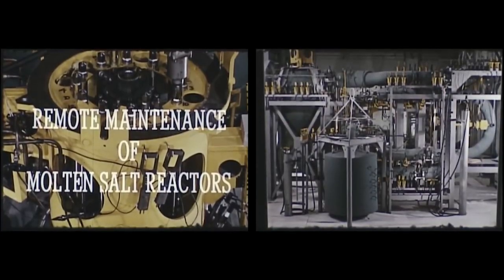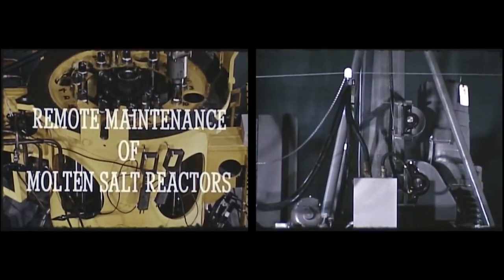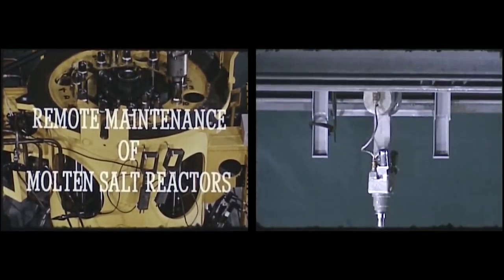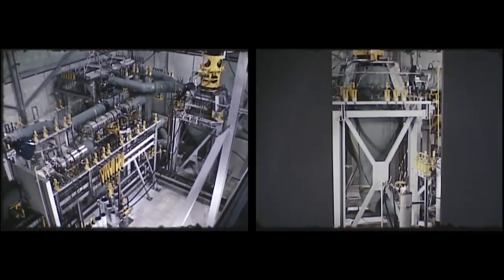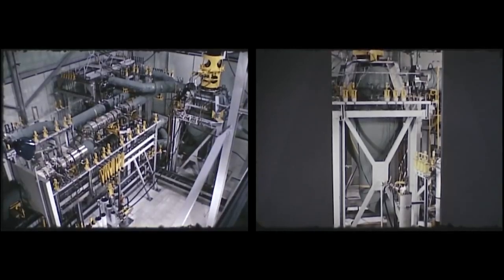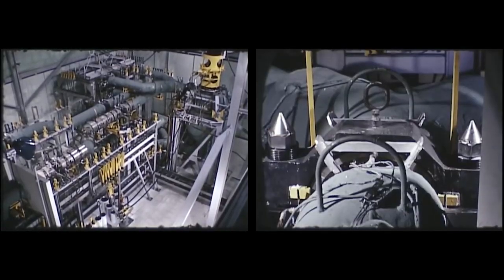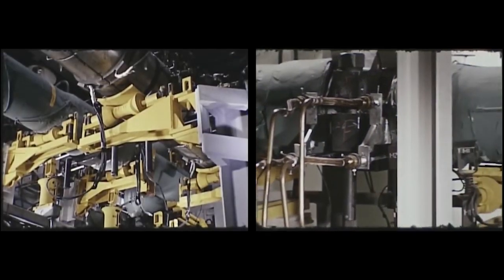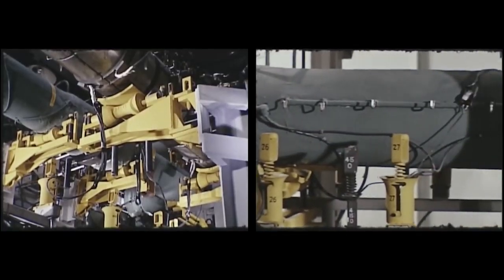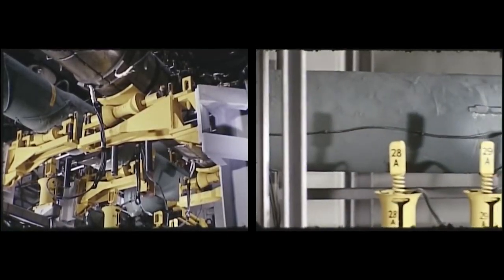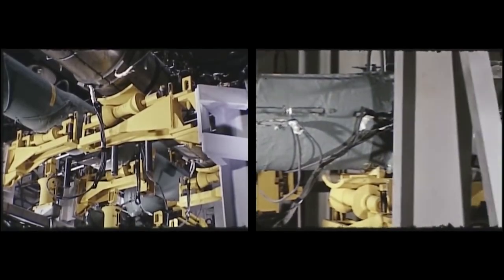The laboratory initiated a program to develop component maintenance and replacement through remotely controlled operations. A mock-up of a small reactor system, 20 thermal megawatts in size. The reactor is connected to the primary piping circuit by two 6-inch mechanical joints of the freeze flange type. Specially designed adjustable spring supports permit all piping to expand or contract freely without overstressing the pipe.